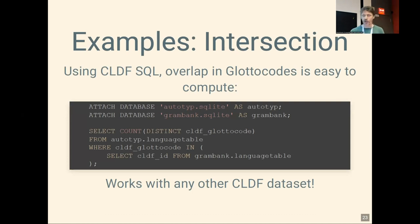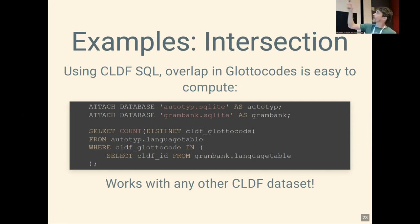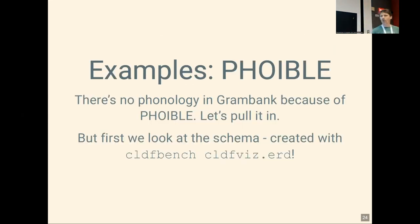That's how I computed the intersection between GramBank and those other global datasets. The intersection is a fairly simple SQL statement, and the beauty is that for computing the intersection of GramBank with any other CLDF dataset, you just switch out the filename of the SQLite version and get the intersection with whatever other dataset. A slightly more complex example is integrating GramBank data with PHOIBLE: since there's no phonology in GramBank because of PHOIBLE, we can compute WALS's phonology data from PHOIBLE and integrate that with GramBank.